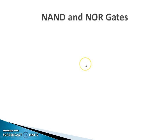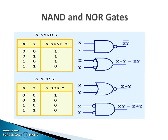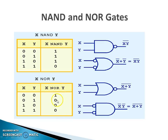Now let's see some special gates: NAND and NOR gates. I call them special because of a very particular feature which I will discuss in the next slide. The NAND gate is the complement of AND, so the output of the NAND gate is the complement of (x AND y). If you look at the truth table of the NAND gate, it is exactly the reverse of the AND gate. Similarly, the NOR gate is a complement of the OR gate, so its expression is the complement of (x OR y), and its truth table is exactly the inverse of the OR gate.